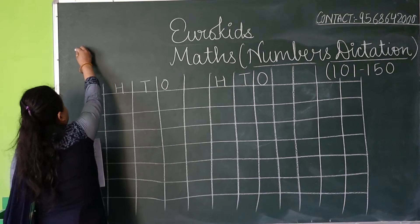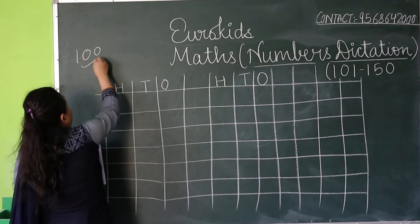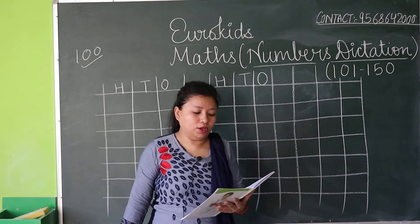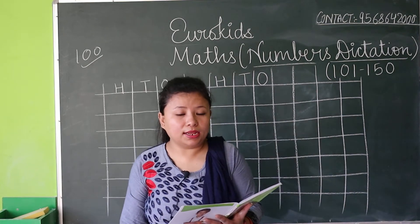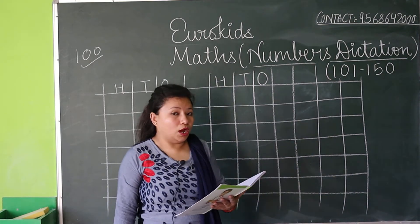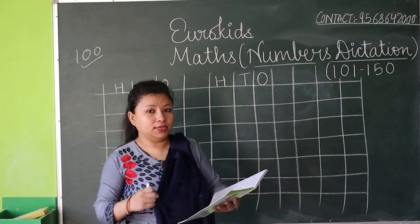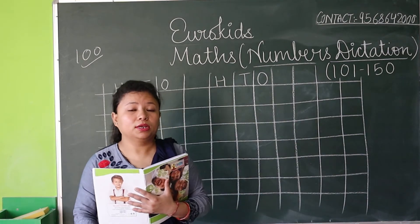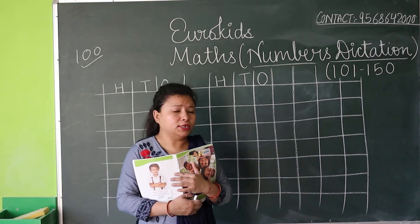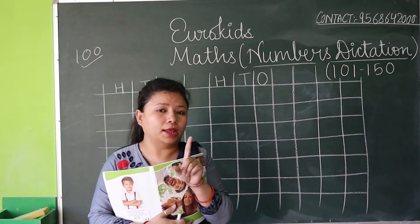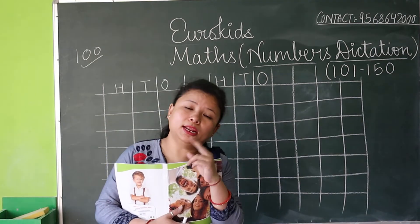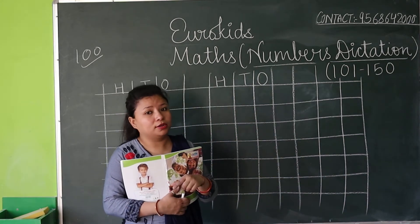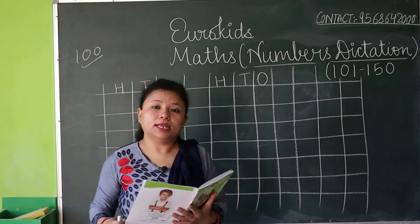Now my next number is 111. From 'hundred' you know it means we write one, and 11 — you know how to write 11: one and one. So, hundred-eleven — 111.